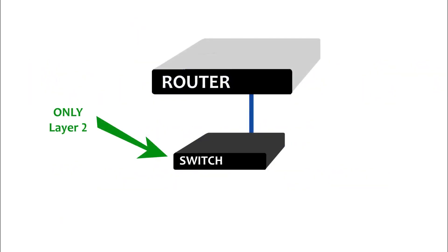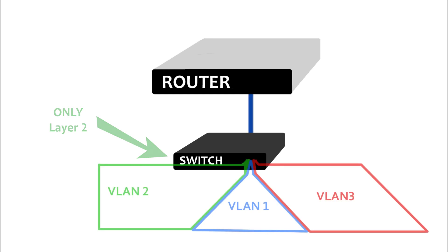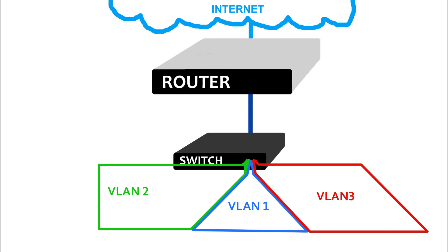Let's say you have a primary Layer 2 switch on your network. You've invested a lot of money purchasing the switch, and you've determined, as any good admin or engineer should, that you are going to be using multiple VLANs on that network to keep traffic to a minimum and to allow more control over which nodes or devices can access other nodes. You have a router used for external connection to other networks or to the internet, but the single switch you have is not capable of handling Layer 3 traffic — it can only handle Layer 2 traffic.